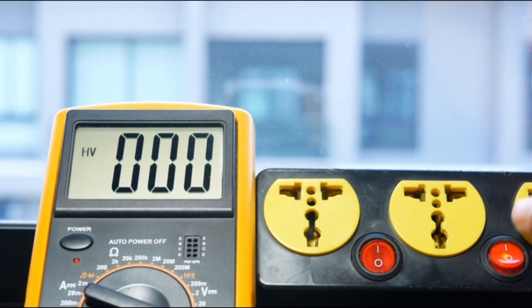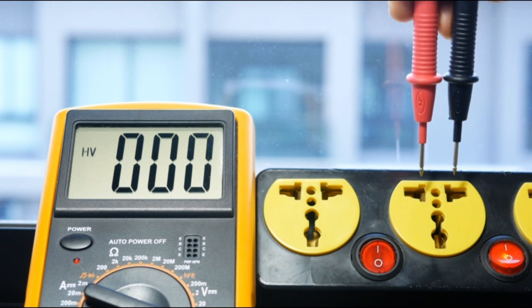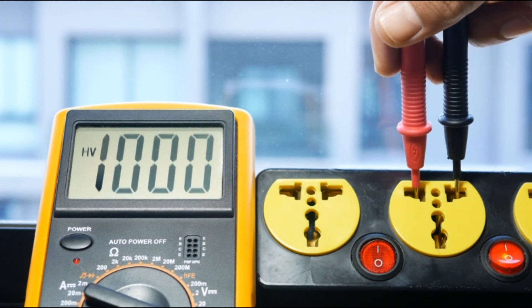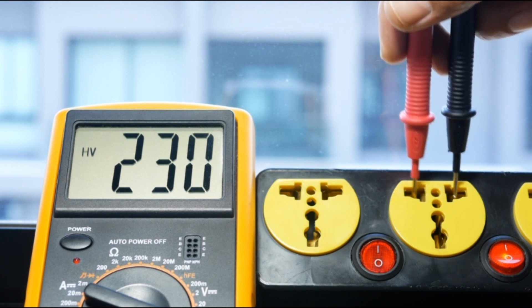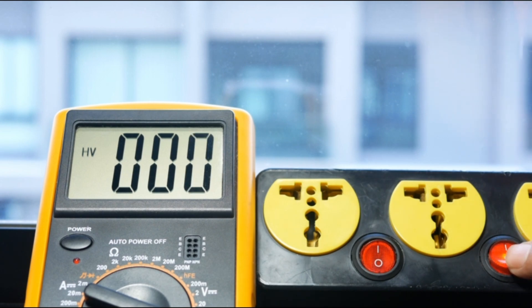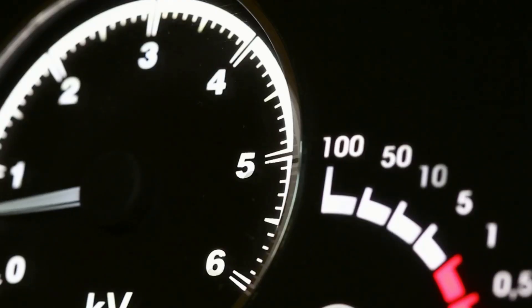As we unravel the mysteries of voltage and current, it becomes clear that the real danger isn't always in one parameter alone. The welding machine serves as a perfect example, highlighting the importance of considering both voltage and current, along with other factors like resistance.